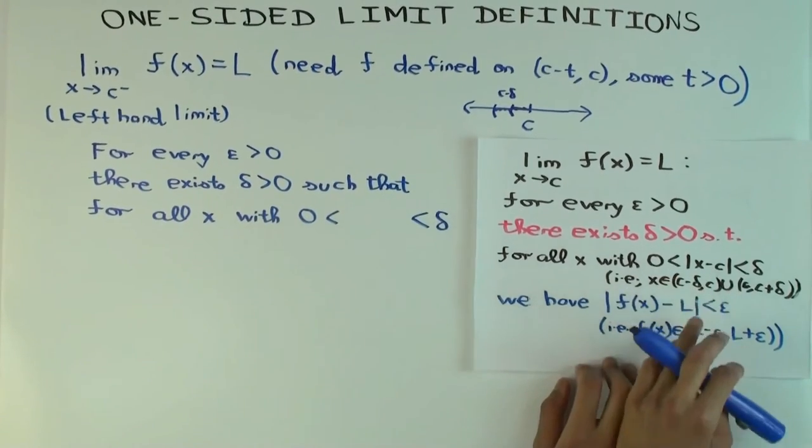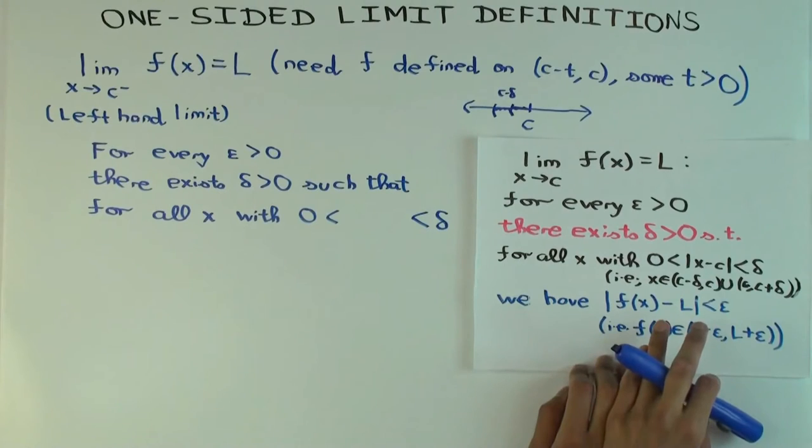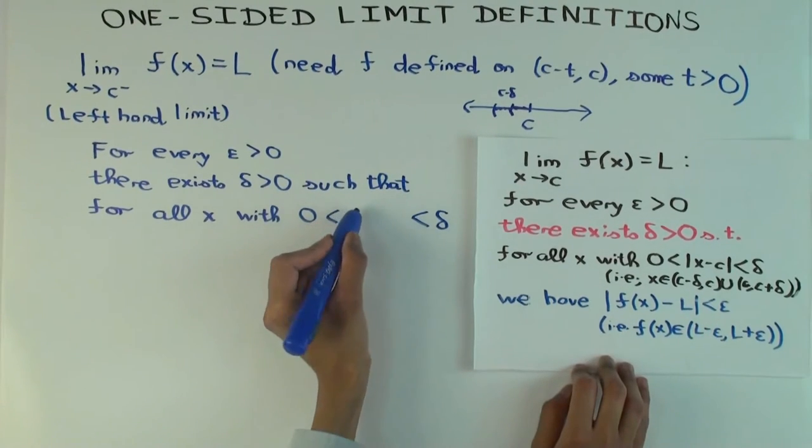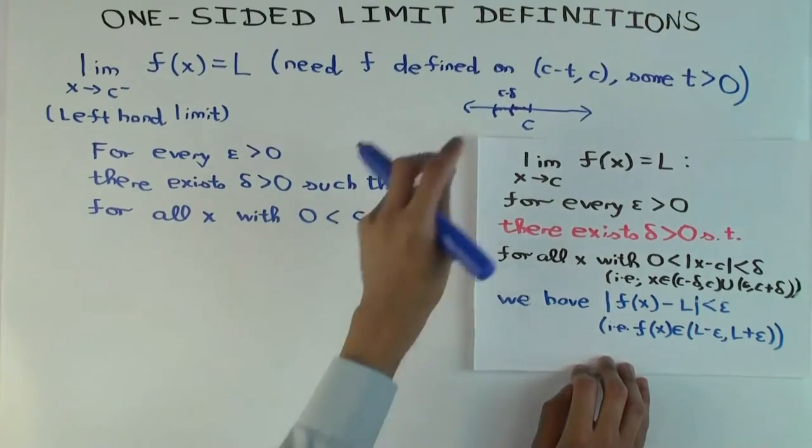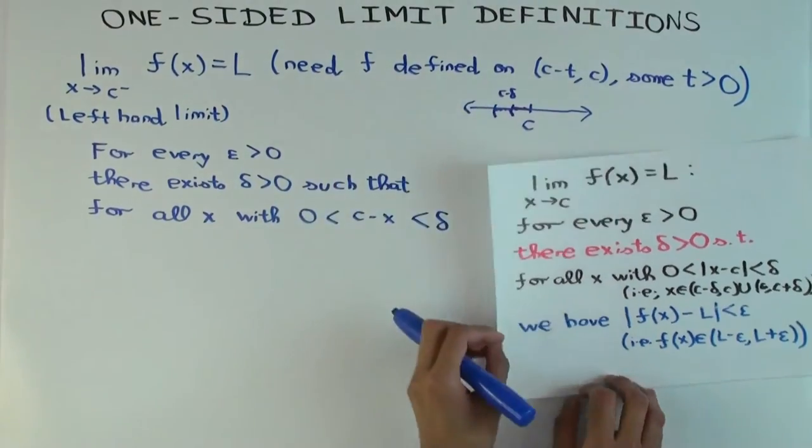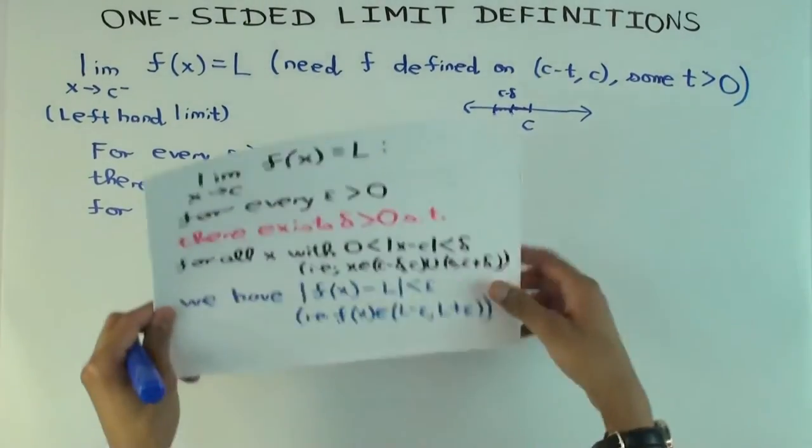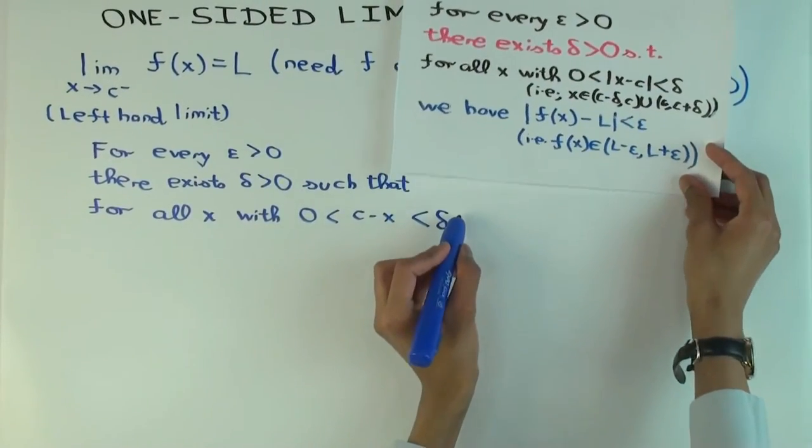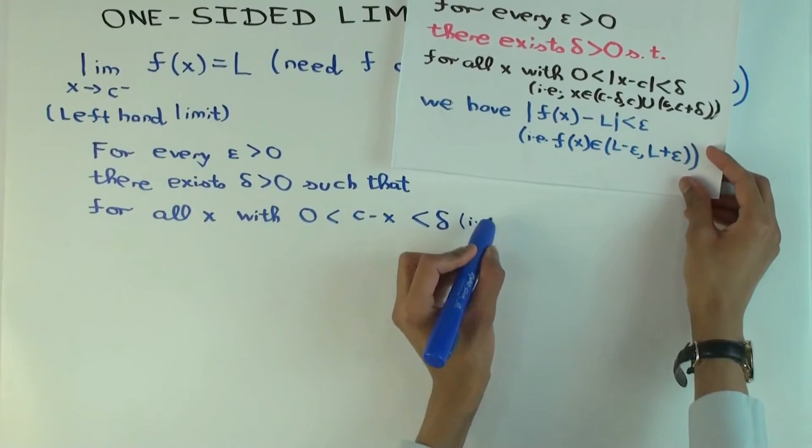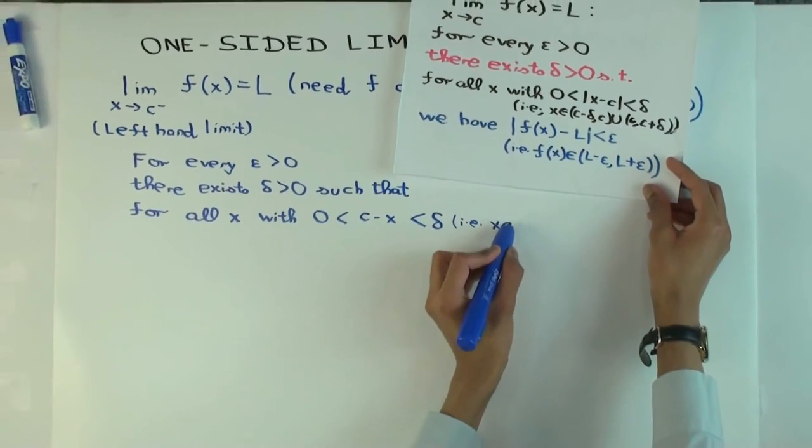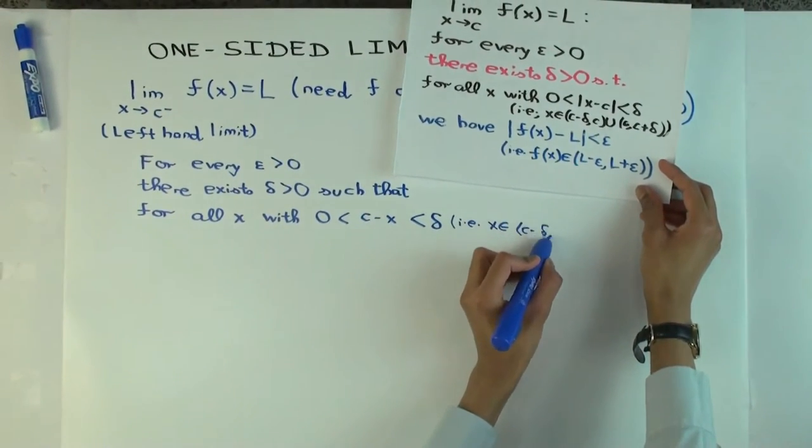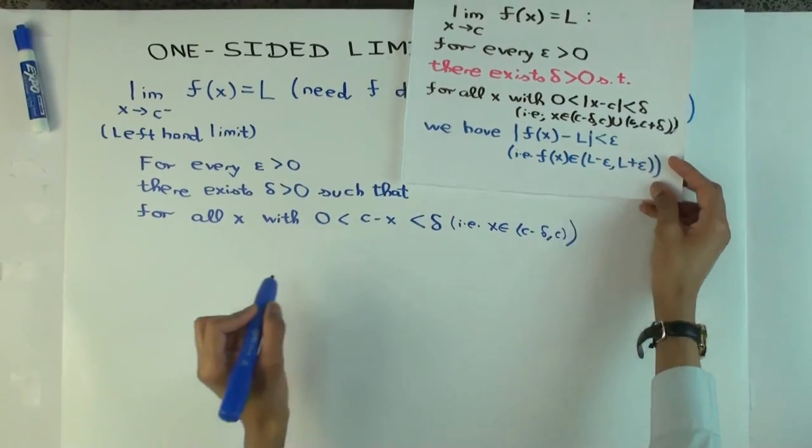So, will you put x minus c or c minus x? I'll be x minus c. Oh, c minus x. C minus x? Because you want c to be bigger than x. You want x to be on the left of c. So what would this read? I, E, x is in c minus delta to c.